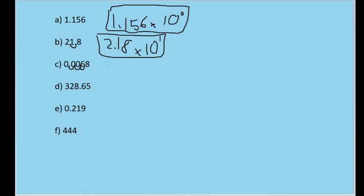So our order of magnitude should have a negative number to decrease the value in turn, because now we've increased it by changing it from 0.0068 to 6.8.